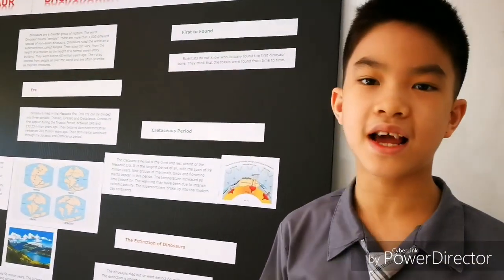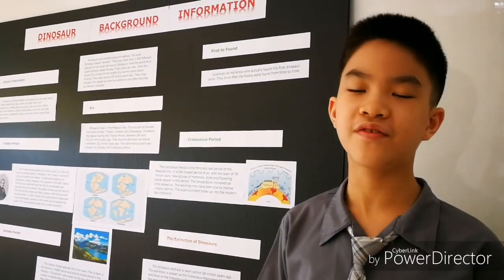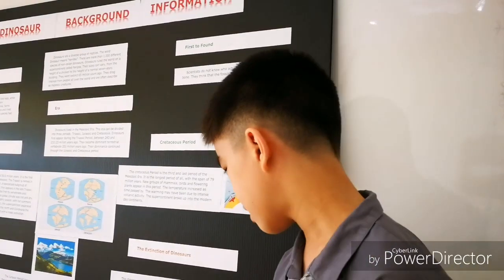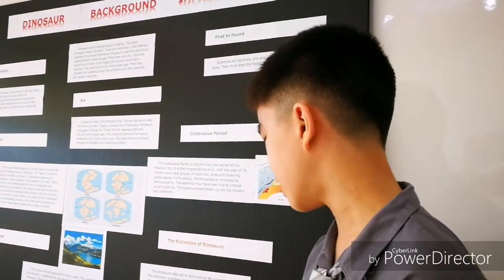It is caused by an asteroid with a size of about 10 to 15 kilometers in diameter. It struck close to the Yucatan Peninsula. The crater is called Chicxulub Crater. It is 15 kilometers in diameter and 20 kilometers in depth.